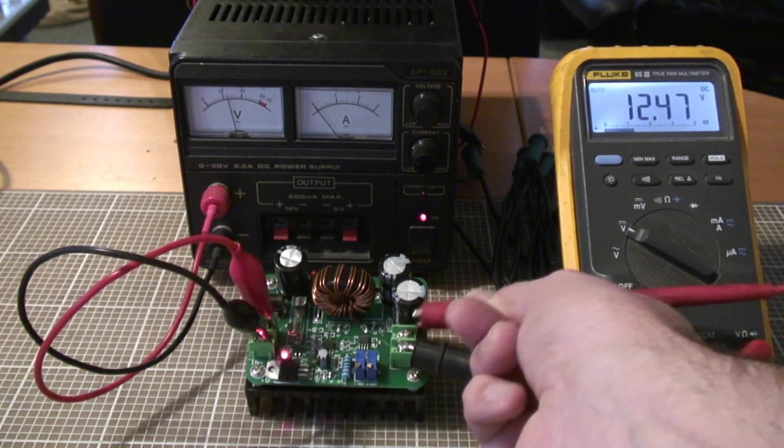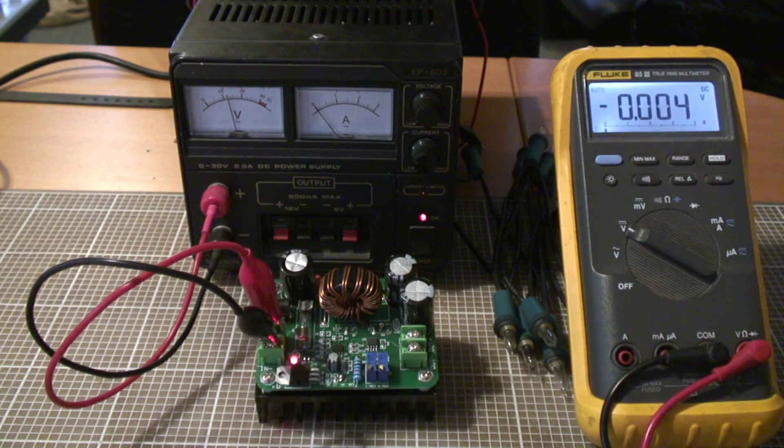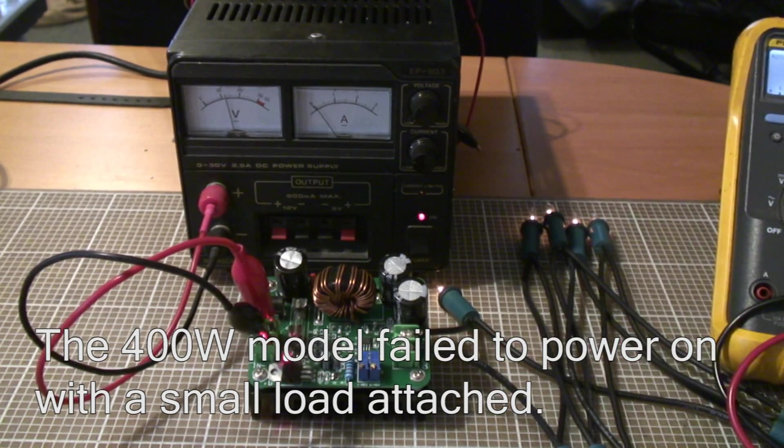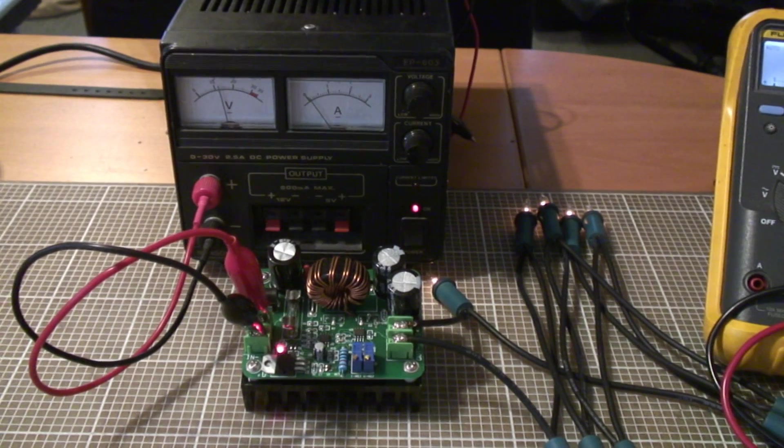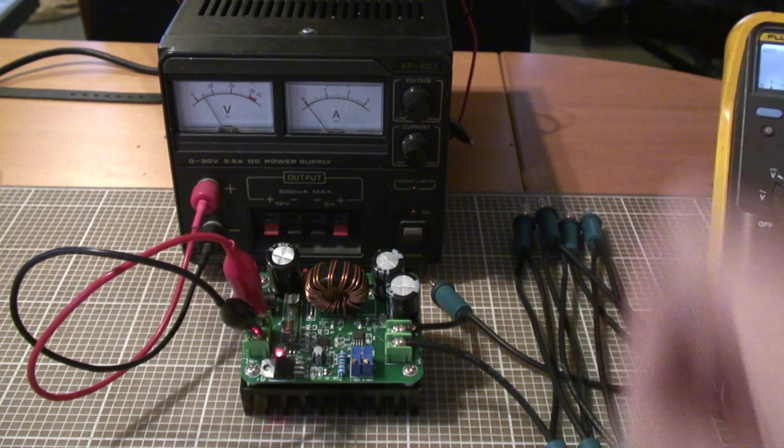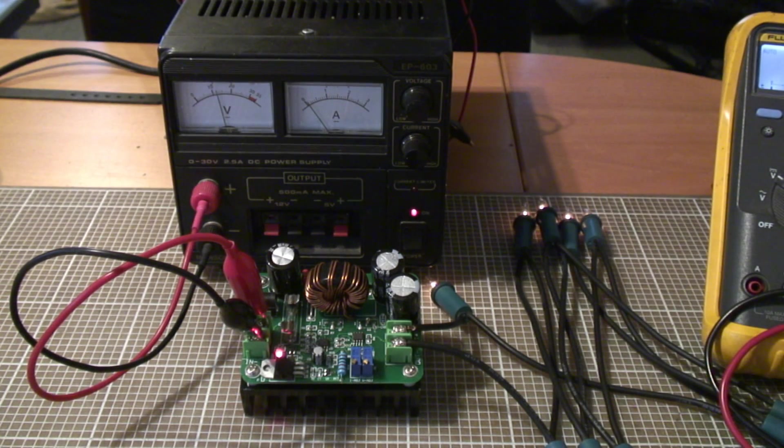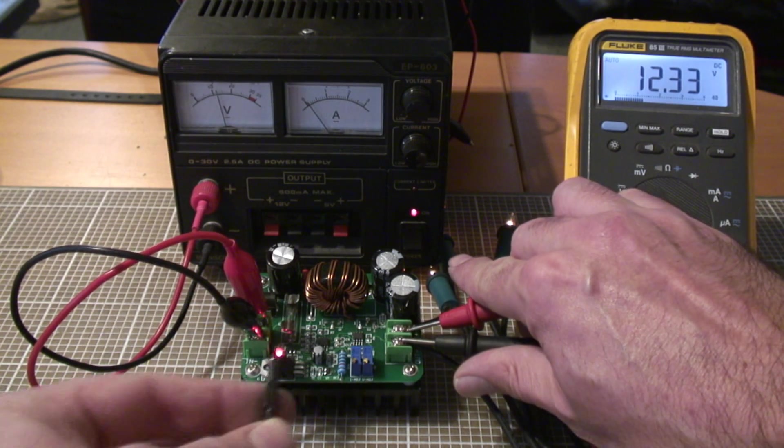So we'll try starting that up with a load on it now. Get our Christmas lights on and we'll do the same on test that we did with the other one. So off, lights go out. On, lights come on at the same brightness and indeed we have 12.33.